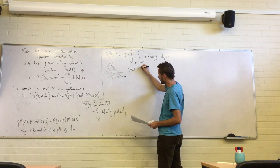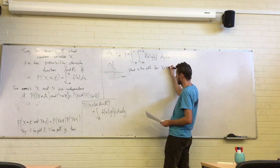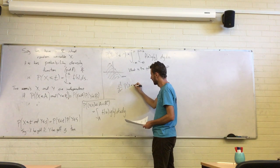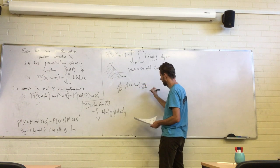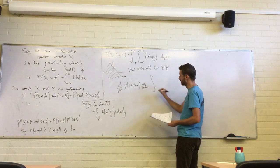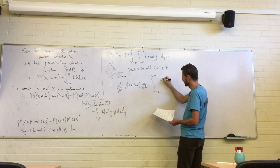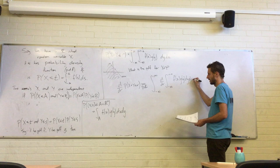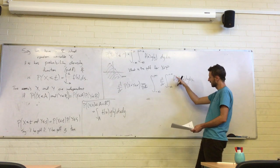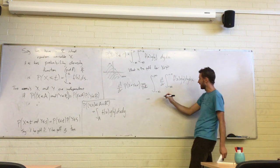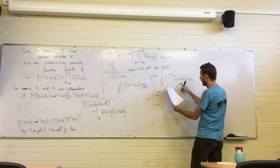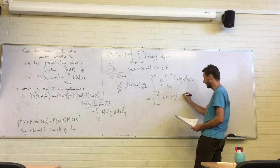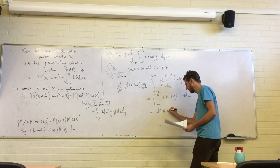So now we're going to ask what is the PDF for x plus y, and we do this just by differentiating. We can move the derivative inside the outermost integral, and then use the fundamental theorem of calculus — since the integrand doesn't depend on r at all, it's just the upper limit. So this becomes the integral from negative infinity to infinity of f(x) times g(r minus x) dx — and that's exactly the convolution of the two functions.